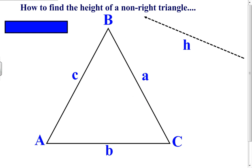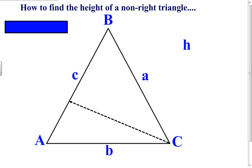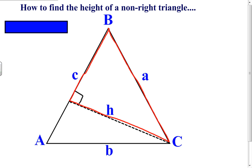We can also draw an altitude from any angle. The first time I did it from angle B; this time I'm going to draw an altitude from angle C. Once again, when you draw an altitude, you create perpendicularity, which then in turn creates our height for the triangle. You can see that we've separated into two right triangles. Since we've already worked with angle A in the first slide, let's work with angle B.